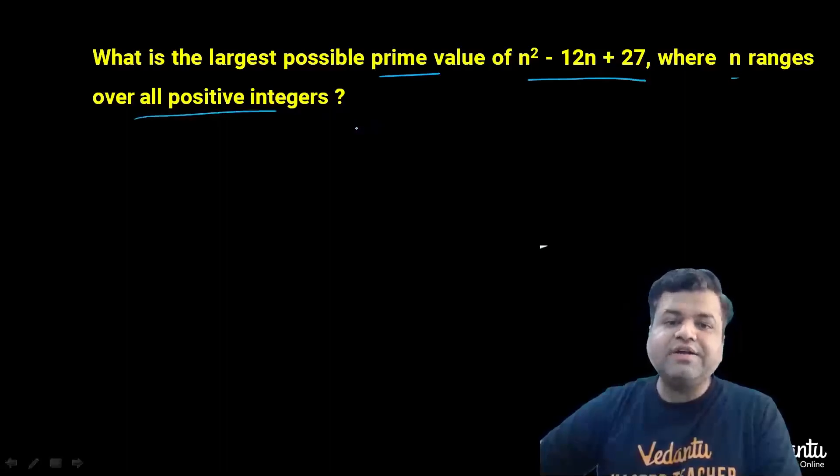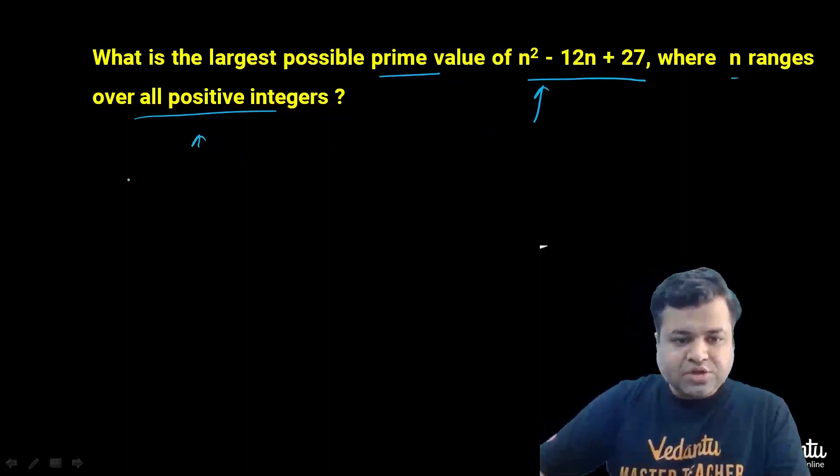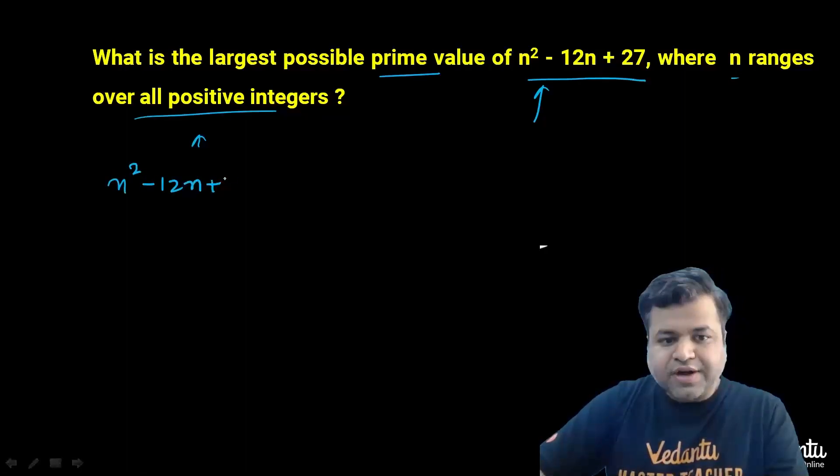Basically we need to find the largest possible prime number which is of the form n² - 12n + 27, where n is a positive integer. So let's try to factorize this thing, n² - 12n + 27.